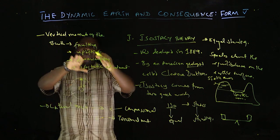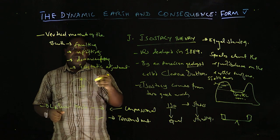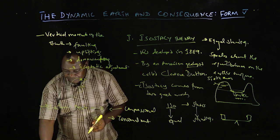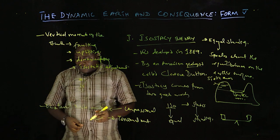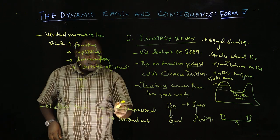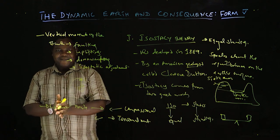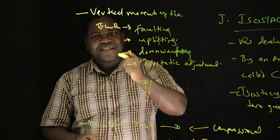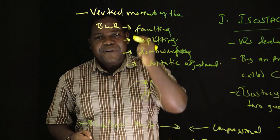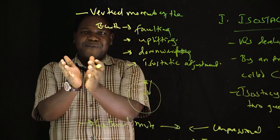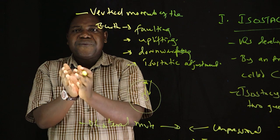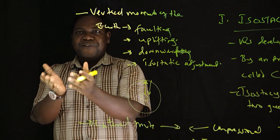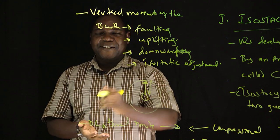We have weight increase on the lowlands and weight reduction on the highlands. This is what Clarence Dutton tried to describe. The theory makes an emphasis that whatever you do on the earth's surface, the earth will still make a struggle to bring back the balance between the materials. The mountains are always disturbed by denudation processes — denudation includes erosion, mass wasting, and weathering.